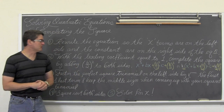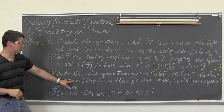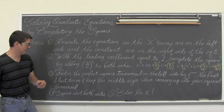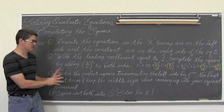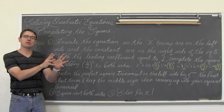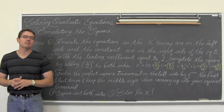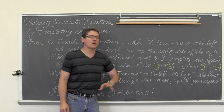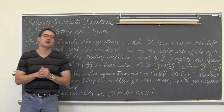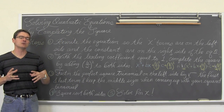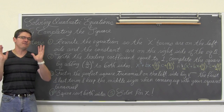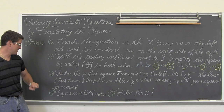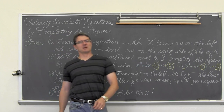Factor the perfect square trinomial on the left by taking the square root of the first term, the square root of the last term, and keeping the middle sign to form your squared binomial. The trinomial x² + bx + (b/2)² is a perfect square trinomial and factors by this pattern. Then square root both sides and finish solving for x.